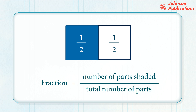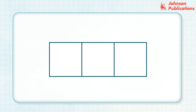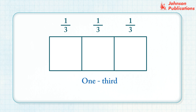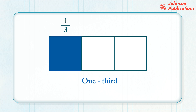Look at the given figure. When a whole object is divided into three equal parts, each part of an object is called one third of the whole object. There are three equal parts and each part is called one third. If we shade one of the parts, then we say that one third of this shape is shaded. The fraction one third is written like this and is read as one by three.